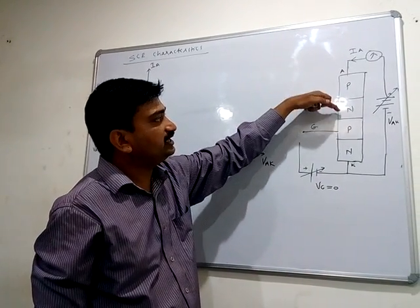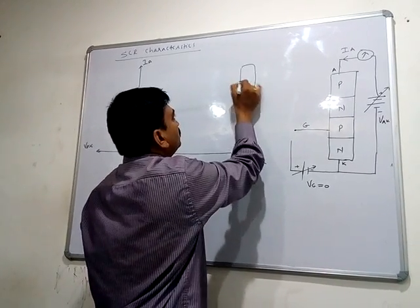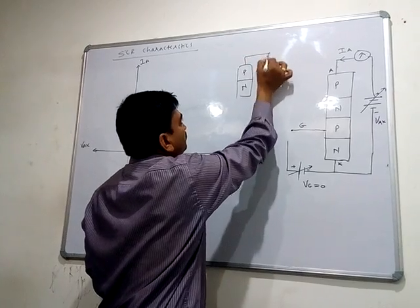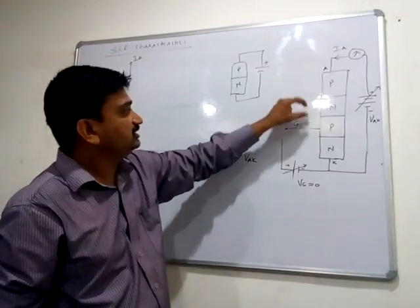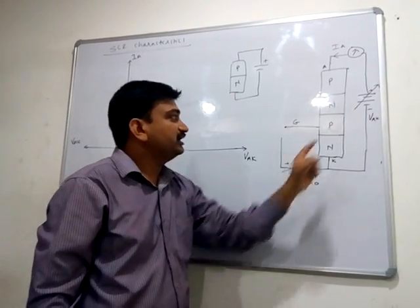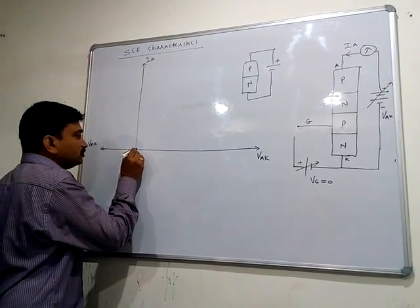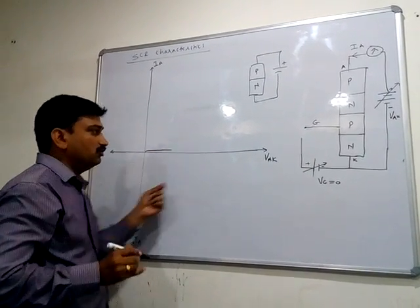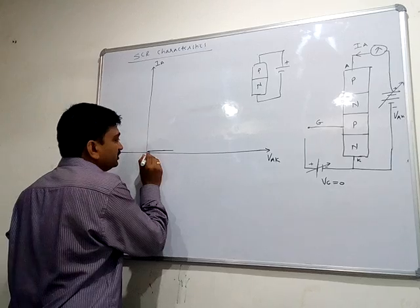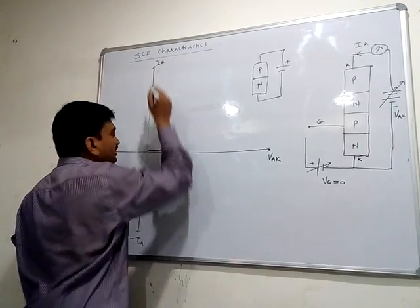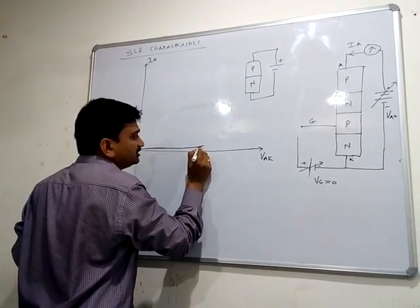There are two extra layers in the SCR — the N and P layers — unlike a simple P-N junction diode which easily conducts. Because of these extra layers, if you increase the voltage in forward bias you get a very small current. So as you increase VAK, the anode current IA is very small initially.